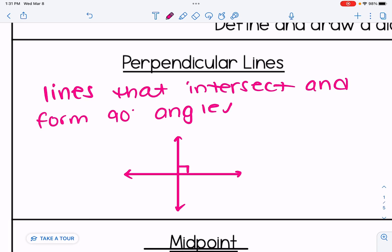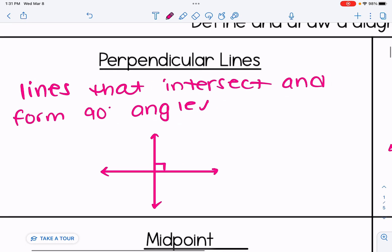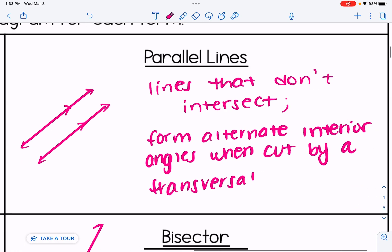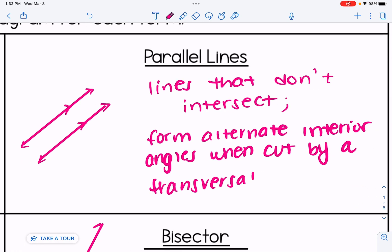Perpendicular lines are lines that intersect and form 90-degree angles. Parallel lines are lines that do not intersect, and when they are cut by a transversal, just like I'm adding in the picture here, different angles are formed, one of them being alternate interior angles.